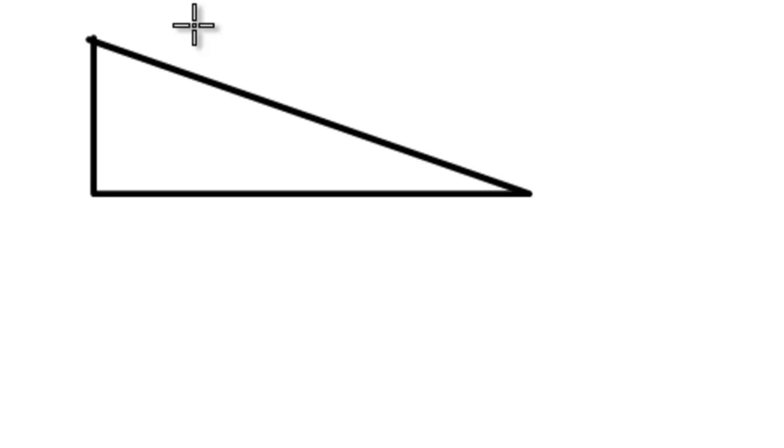So I have a triangle. I want to indicate that the right angle is here. I'll use the shift technique to do a horizontal line, then a vertical line. And now I have a right triangle.